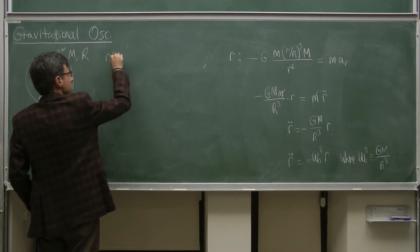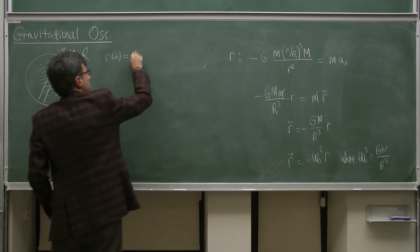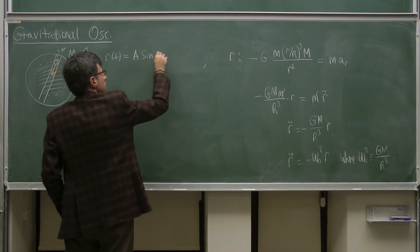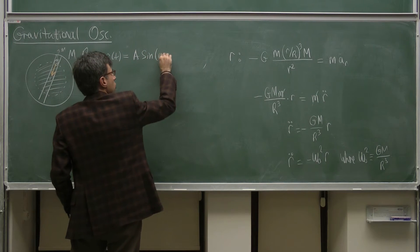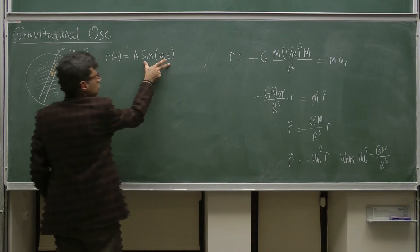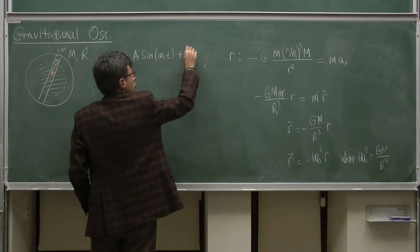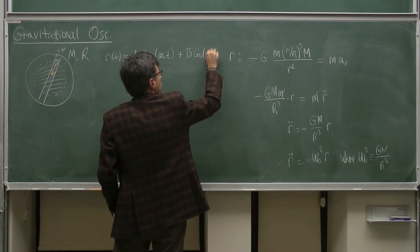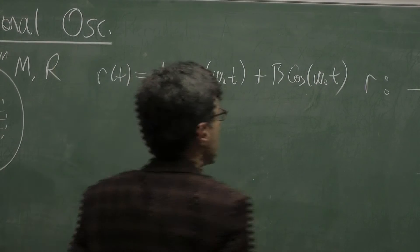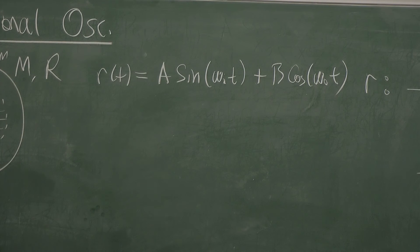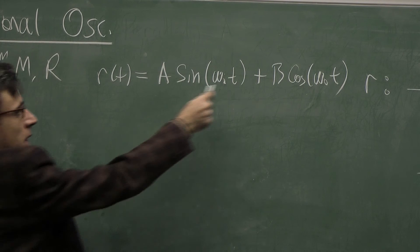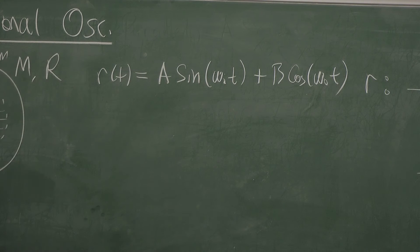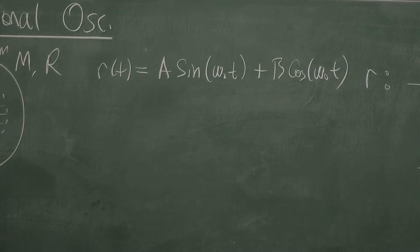The solution of that differential equation, as we have studied many times, is quite simple. This is the ideal oscillator. Then r(t) equals A sin(omega_0 t) — this is one of the solutions — plus B cos(omega_0 t) is the general solution. We can express the same solution using a phase and an amplitude, but let's leave it as it is.